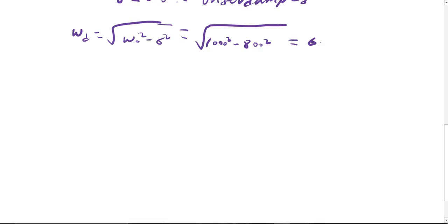For the under-damped, what we're going to use is first thing we want to calculate is the damping frequency, omega d equals radical of omega naught squared minus alpha squared. This gives you radical of omega naught is 1000 squared minus 800 squared. This gives you 600.